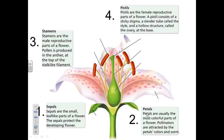The pistils are the female reproductive parts of the flower. A pistil consists of the sticky stigma at the top, a slender tube called the style, and a hollow structure at the bottom called the ovary. These are all of the parts you need to label in your notes.